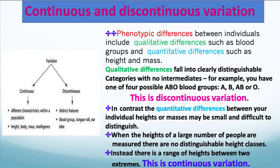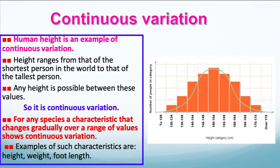In contrast, the quantitative differences between individuals, like height or weight, may be small and therefore difficult to distinguish. When the heights of a large number of people are measured, there are no distinguishable height classes. Instead, there is a range of heights between the two extremes, and this is called continuous variation. Human height is a good example because height ranges from that of the shortest person in the world, which you see on one tail of the curve, to that of the tallest person on the other tail. Any height is possible between these values — it's not discontinuous. It's not that you're either 5'1 or 6'1; you could be any possible height in between.